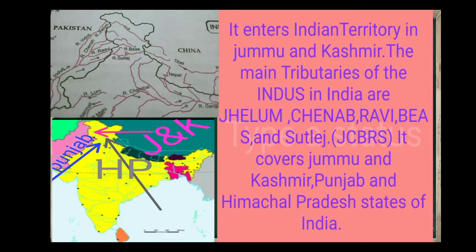The Indus River's main tributaries are Jhelum, Chenab, Ravi, Beas, and Sutlej. The Indus system covers Jammu and Kashmir, Punjab, and Himachal Pradesh states of India.